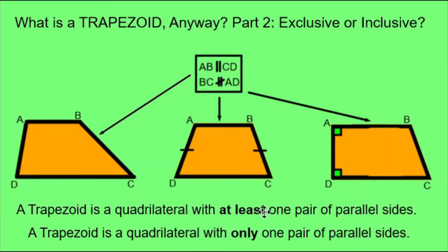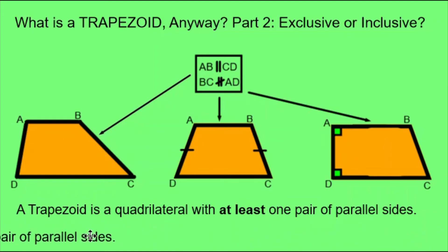So there's quite a difference between having at least one pair, which means you may have two pairs, or only one pair. Let's look at the inclusive definition now.